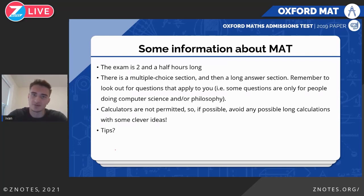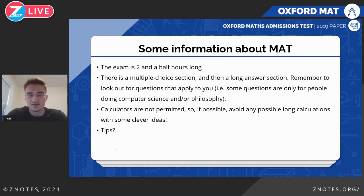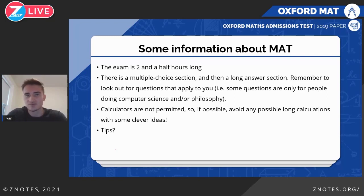Calculators are not permitted, which means that if your solution requires a lot of calculation, there's probably a clever trick that makes it simpler. Having done some past papers, I also did some in high school in case I wanted to apply to Oxford or Cambridge. For multiple choice, if you can find the answer by eliminating choices you know cannot be possible — A, B, C, D, or E — that's always a good strategy.